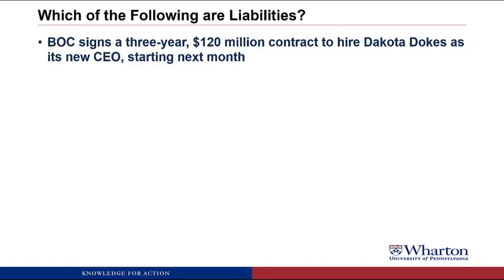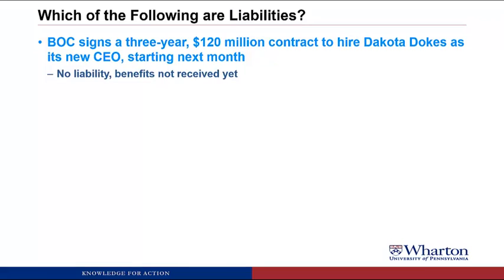BOC signs a three-year, $120 million contract to hire Dakota Doakes as its new CEO starting next month. This one is not a liability because there's no obligation based on benefits that have been received currently or in the past. Until Dakota actually works for us without getting paid, there cannot be a liability. We wouldn't book a liability for the entire three-year contract because we haven't received the benefits yet, and there's too much uncertainty — Dakota could quit, we could fire Dakota, or lawyers could find a way out of the contract.